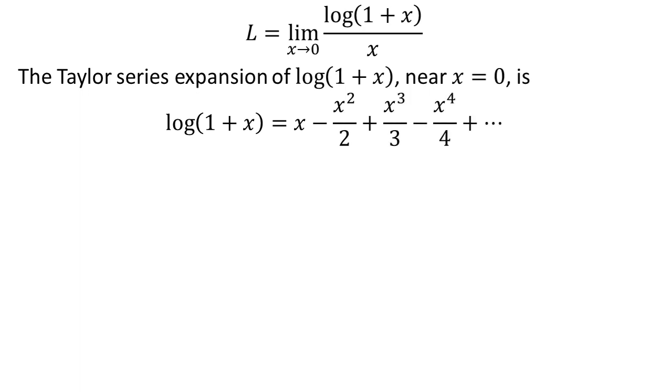The Taylor series expansion of natural log of 1 plus x near x equals 0 is x minus x squared upon 2 plus x cubed upon 3 minus x to the power of 4 upon 4 plus so on.